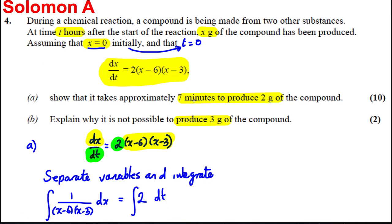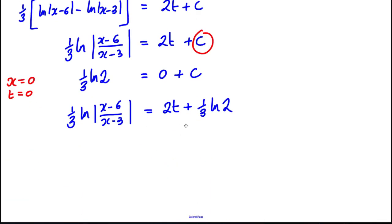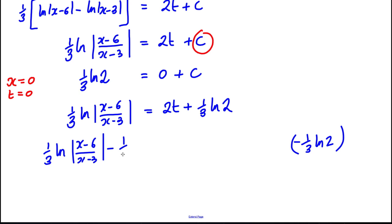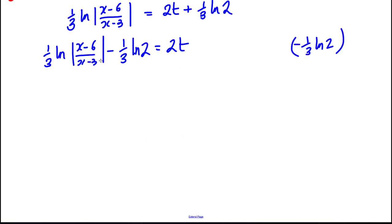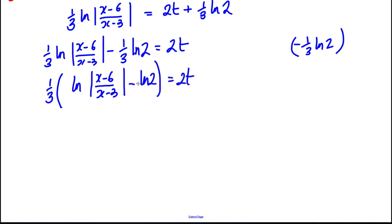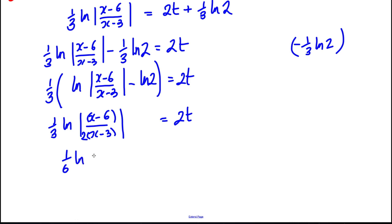The question asks to show it takes approximately 7 minutes, so it would be nice if T were the subject. Subtracting (1/3) ln 2 from both sides: (1/3) ln|(X − 6)/(X − 3)| − (1/3) ln 2 = 2T. Factorising the 1/3 and combining the logs — subtracting logs means dividing — gives (1/3) ln|(X − 6)/(2(X − 3))| = 2T. Dividing both sides by 2: T = (1/6) ln|(X − 6)/(2(X − 3))|.